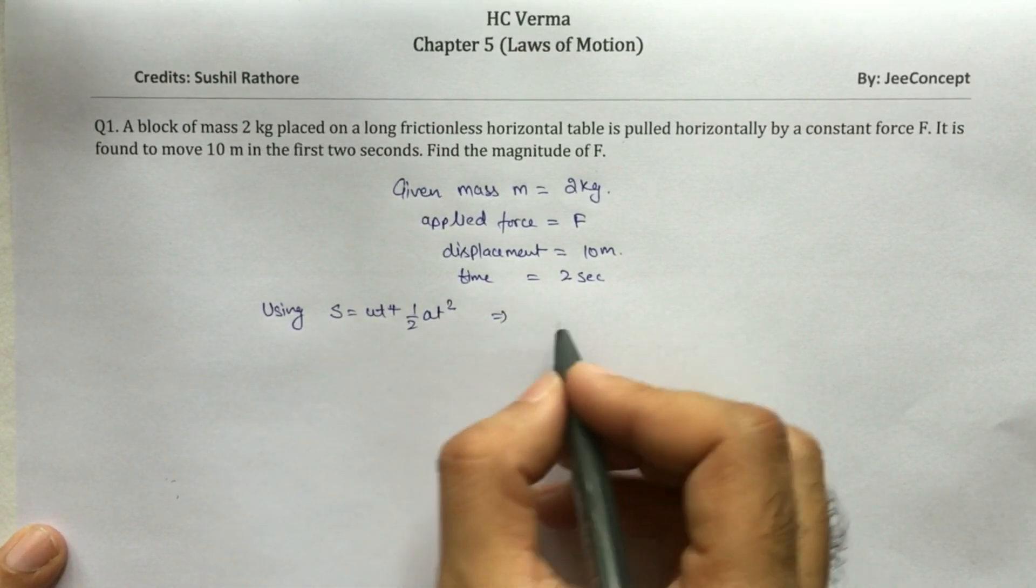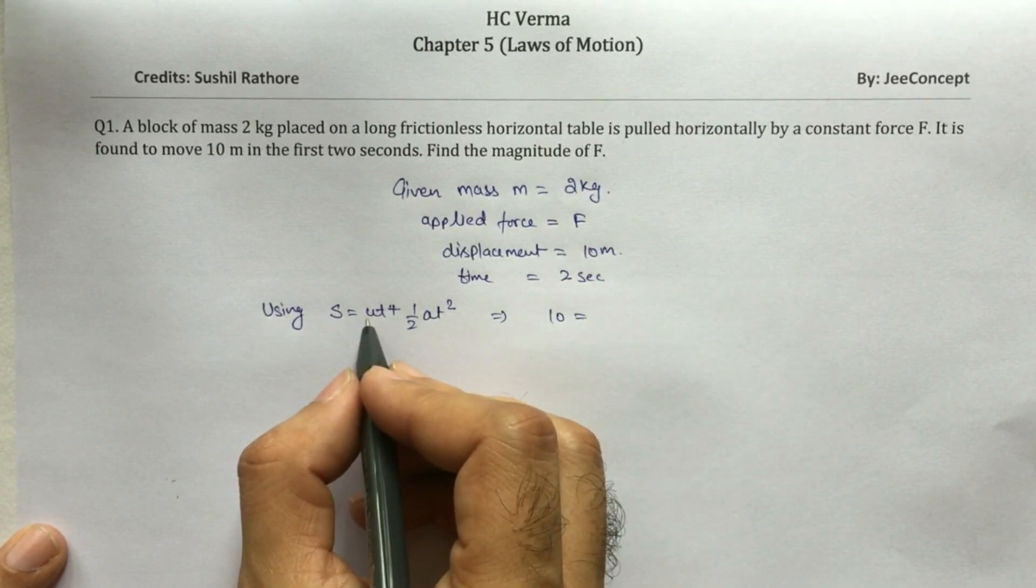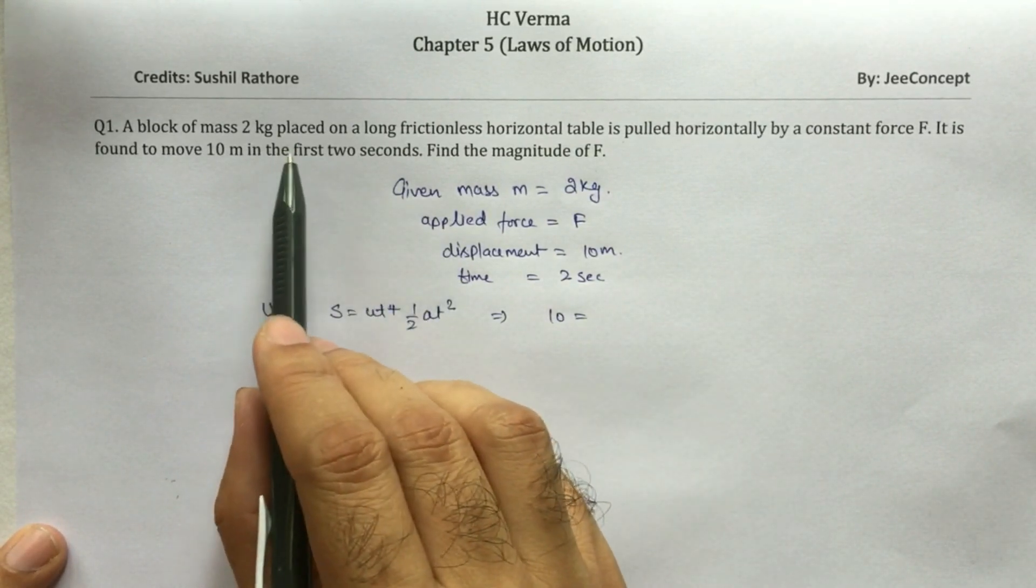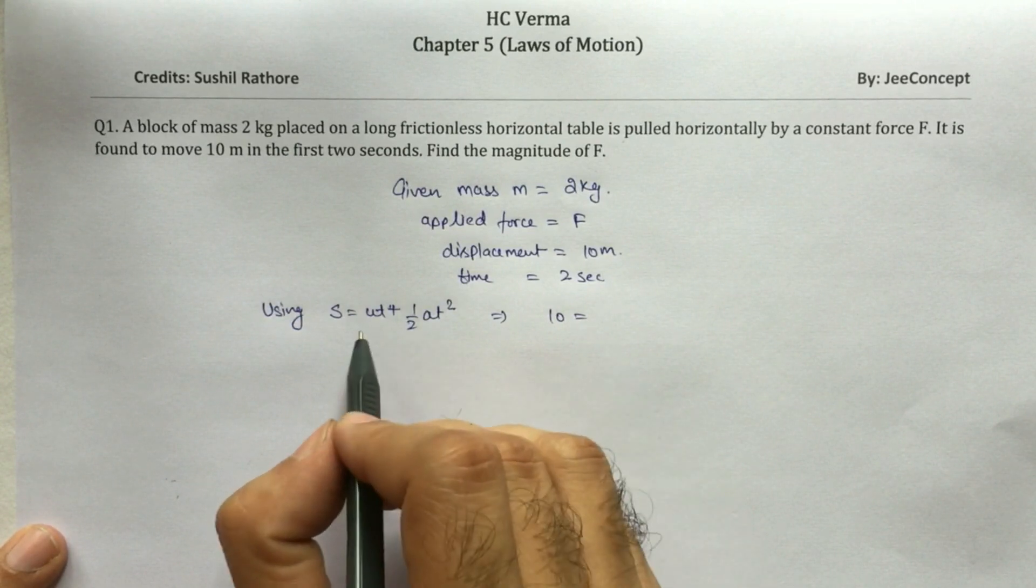So the displacement is 10. Ten equals U, which is 0 because the box was initially at rest.